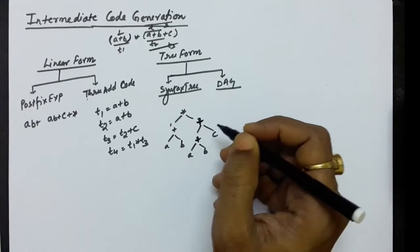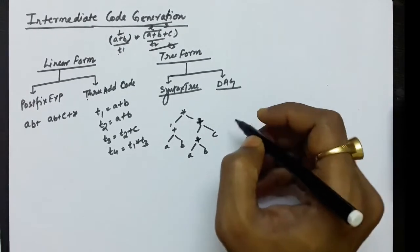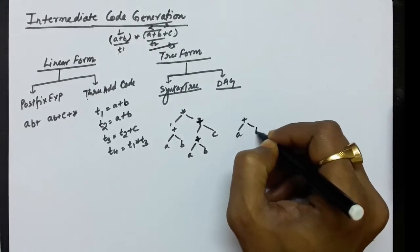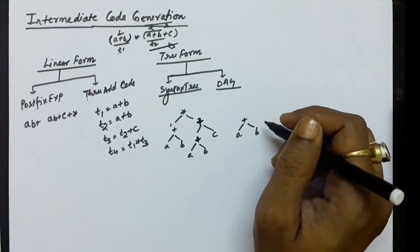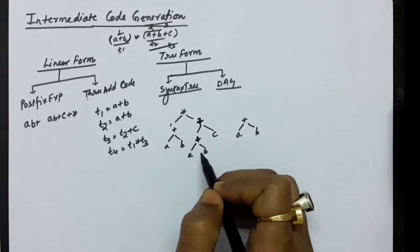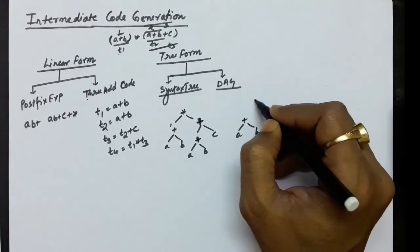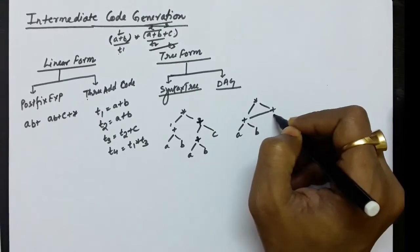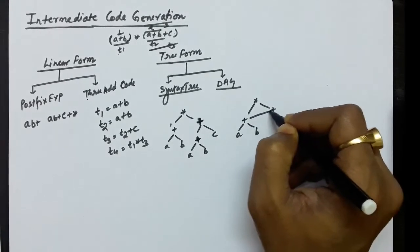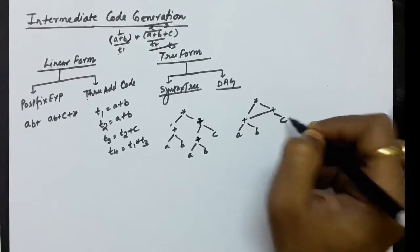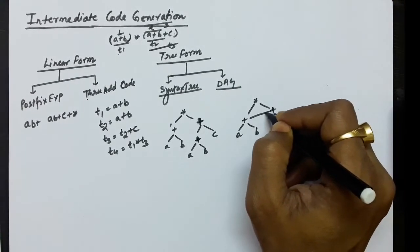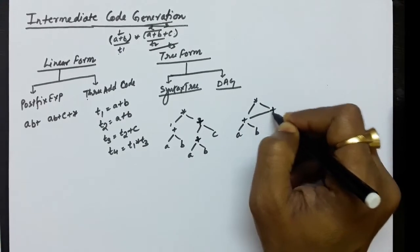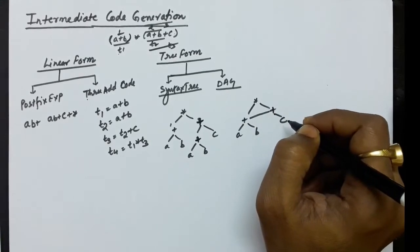In the directed acyclic graph, if a sub-expression has already been computed, it does not need to be redrawn. For example, (a + b) appears twice, so we compute it once and simply provide a directed link for the second occurrence. This is the key idea behind the DAG representation.